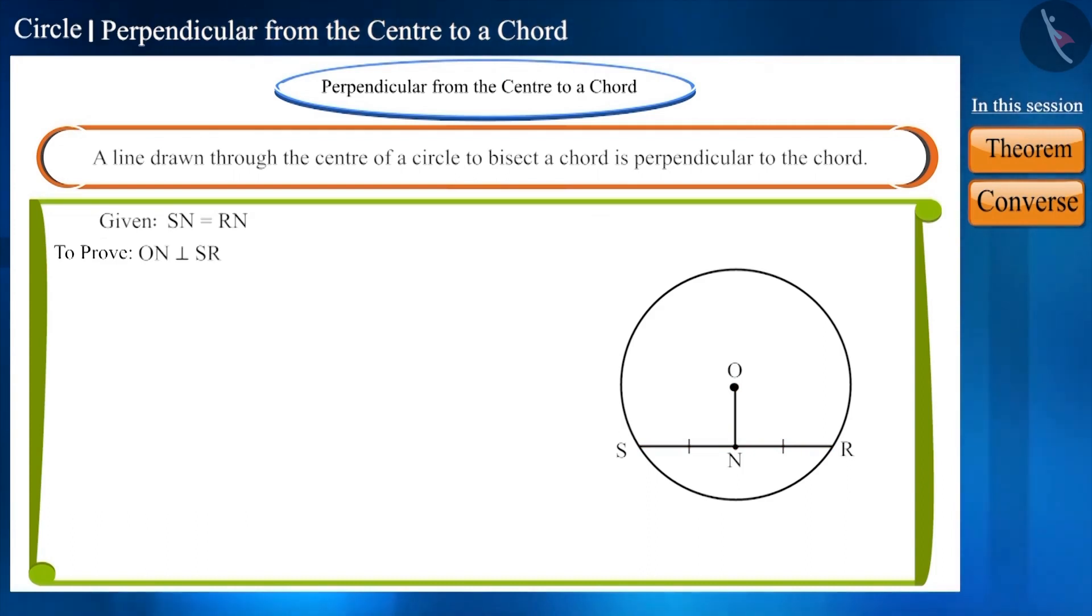We have to prove that line segment ON is perpendicular to side SR. Friends, for this we have to prove that angle ONS and angle ONR measure 90 degrees.